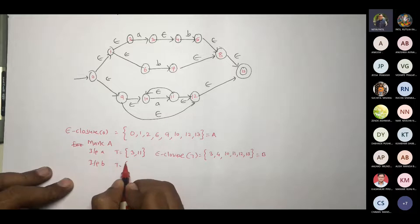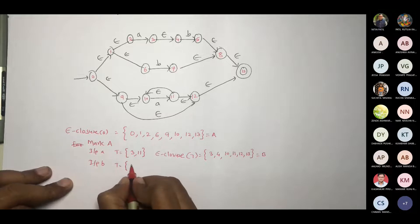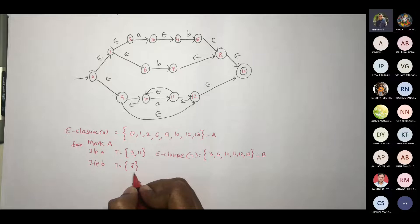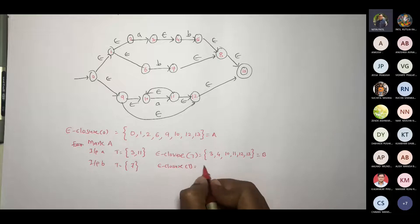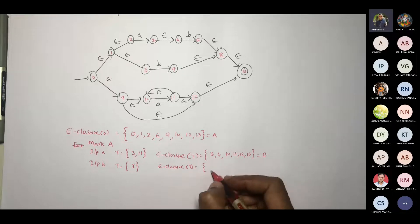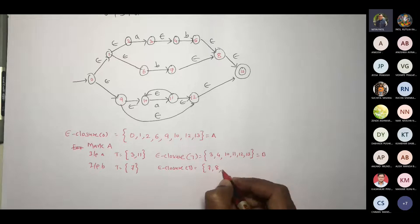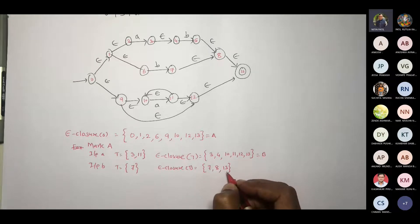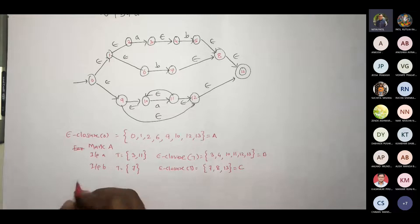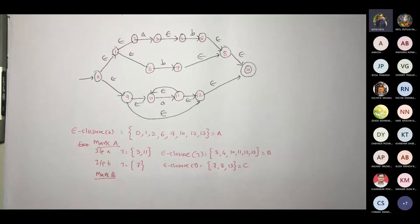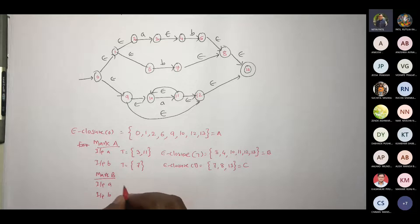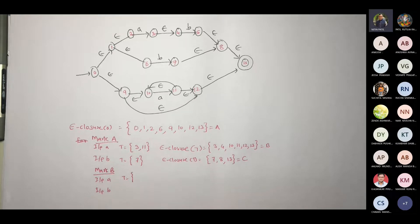Input B: T is only 7. Fine. Epsilon closure of T: 7, 8, 13. Correct? This is C. Mark B. So her answer might be correct, but let us verify it so that everyone can verify whether their solution is correct or wrong.